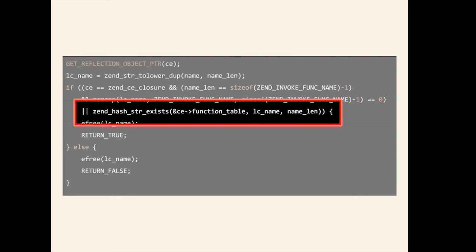For example, this is pretty much most of the reflection class has method implementation. You can see here that, aside from all the cruft doing checking and seeing where we are in code, all we're doing is a zend_hash_exists. What we're doing there is using the class entry, or the CE variable, which has a function table. That function table is a hash map, which has a list of the functions in that class. This simply checks if the hash map contains the lowercase name of the method you're trying to find.